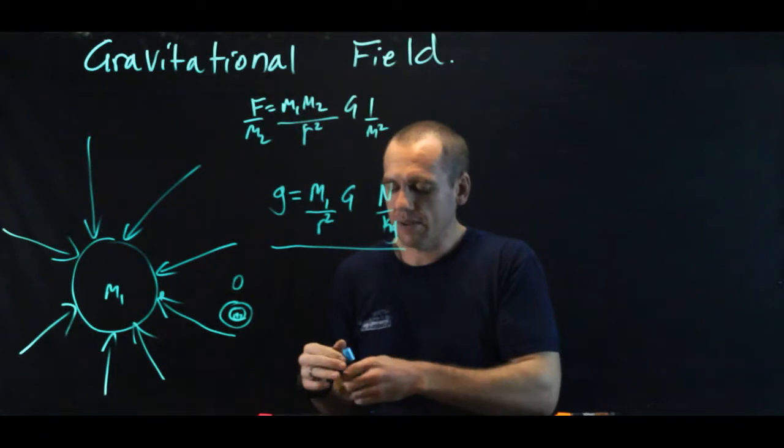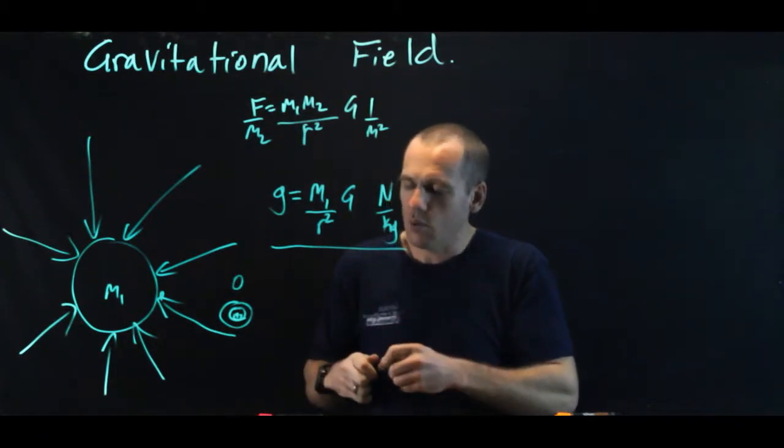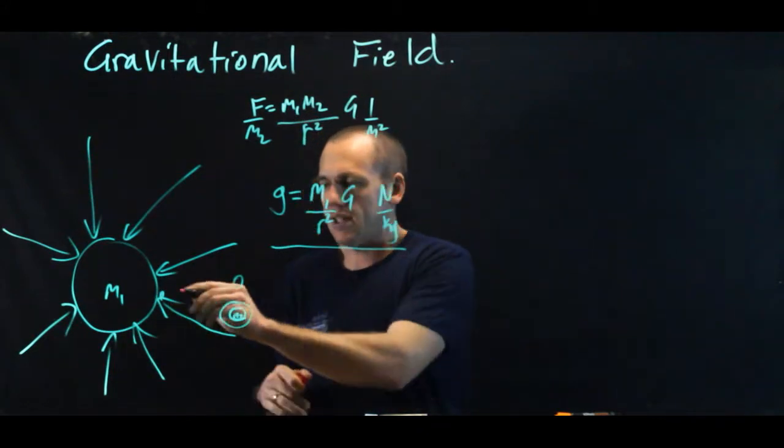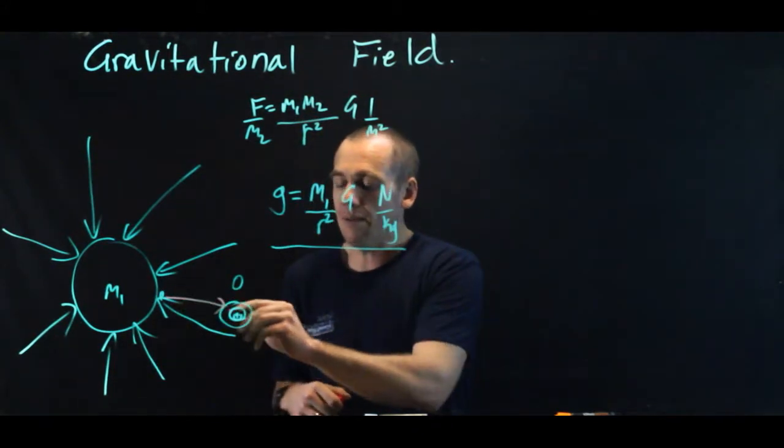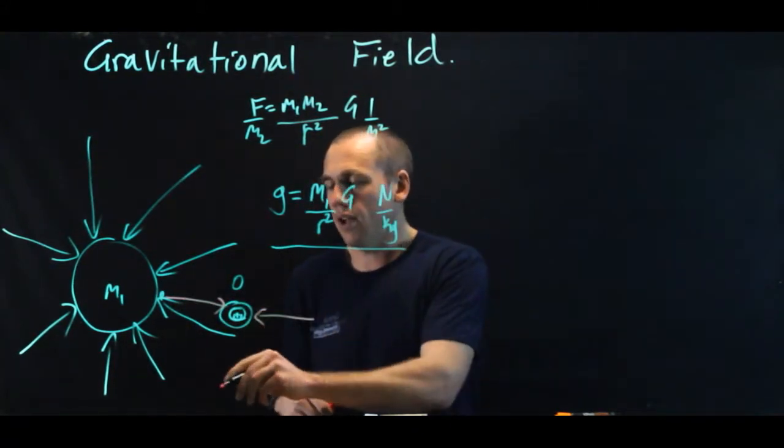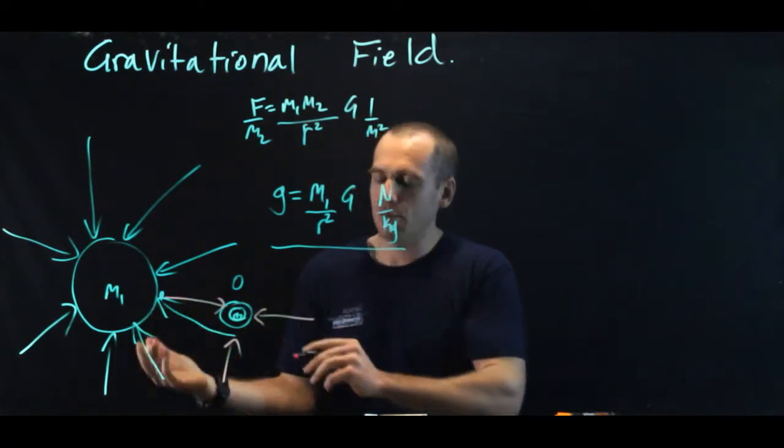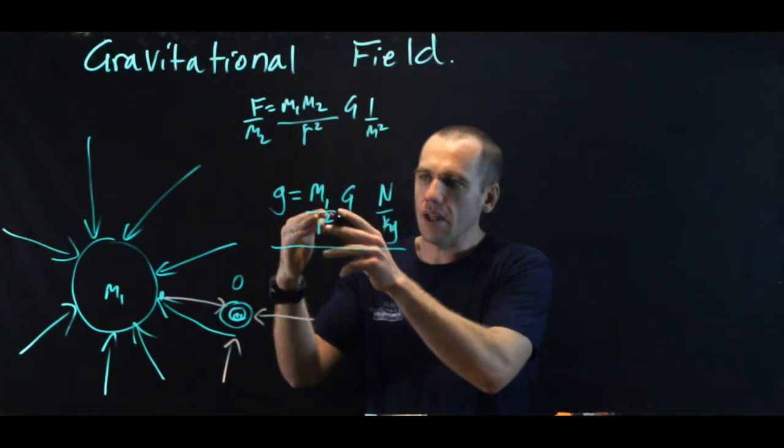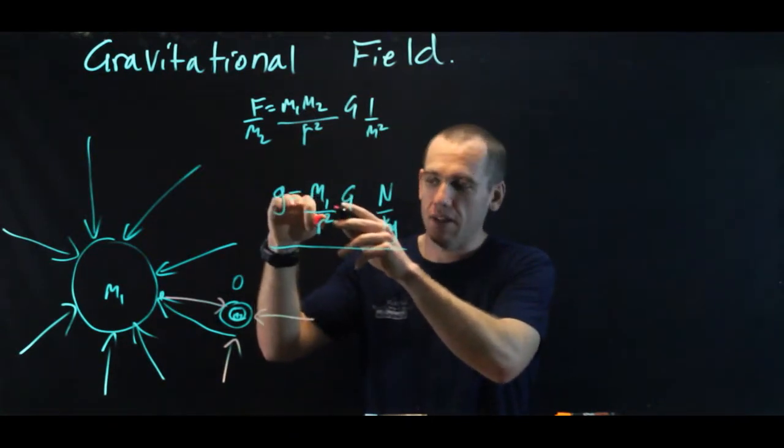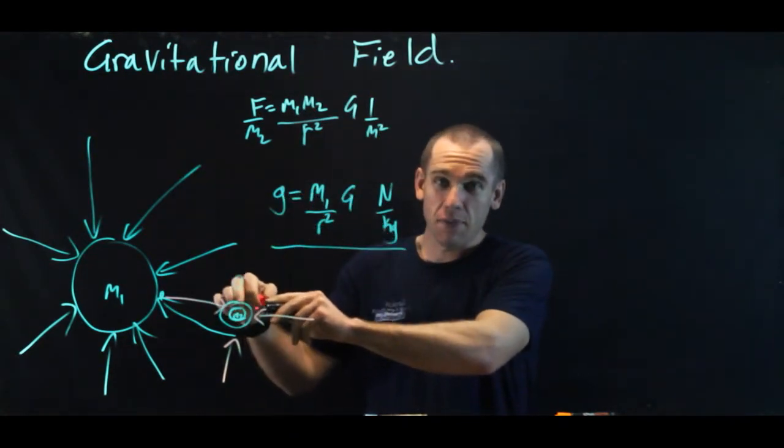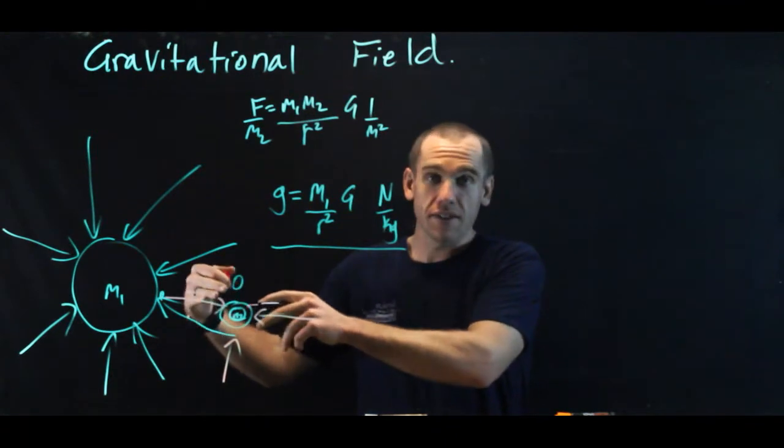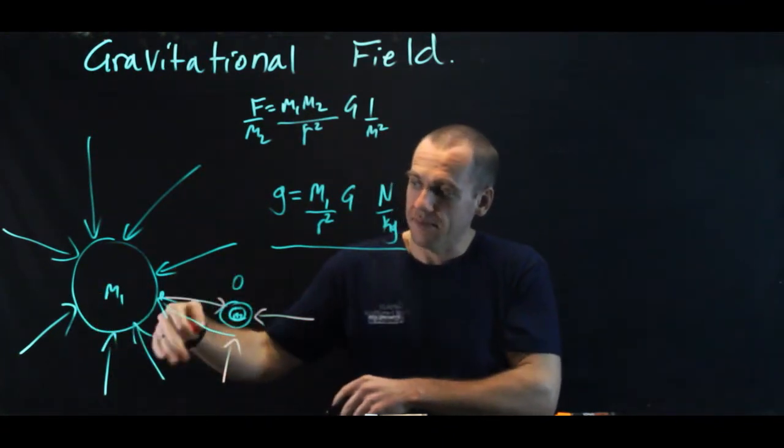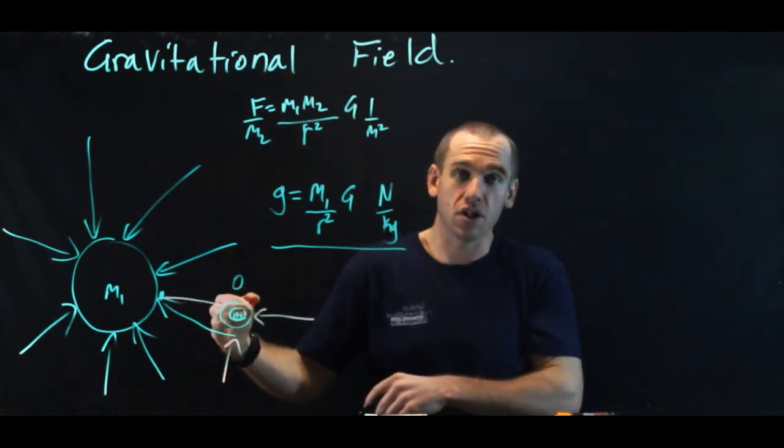And we can reverse this picture, and we could say, well, what about the acceleration of this object, m1, because it's in m2's gravitational field? Because m2 has a gravitational field as well, and so this object is interacting with m2's gravitational field. Well, the only thing that changes is what mass is creating the field. And since this mass is much smaller, its field strength is much less, and so the acceleration of this object is very small compared to the acceleration of that object.